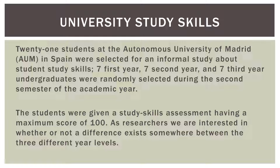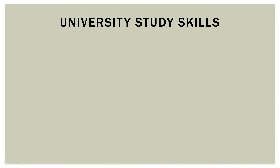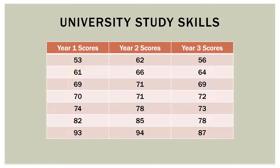As it is presented now, this is a simple one-way ANOVA. We have three groups — first-year, second-year, and third-year students — and we are measuring them on the study skills assessment, looking for a difference among those three groups. Our data might look like this: the first column has year one scores, the middle column has year two scores, and the third column has year three scores, all out of 100.